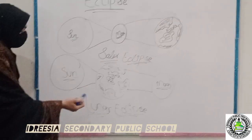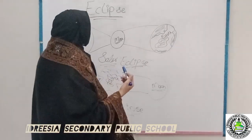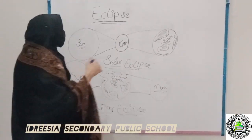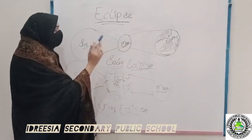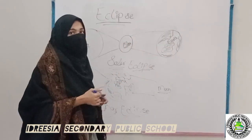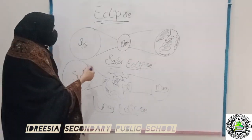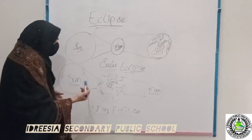It causes an Eclipse. In the stars, we learnt about Eclipse — how Eclipse occurs and what is Eclipse. We also learnt about Solar Eclipse and Lunar Eclipse.